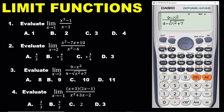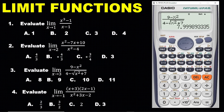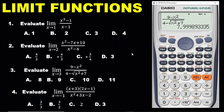Press CALC. The limit is as x approaches three, so use a number close to three — for example, 2.999999. Hit the equal sign and we are getting 7.999, which is very close to eight. Looking through the possible answers, the one closest to this is eight.